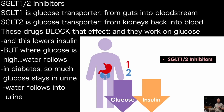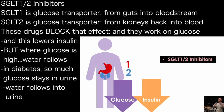However, there are consequences. There's something within physics called an osmotic gradient. Where there is a lot of glucose, water wants to follow. This is why in diabetes the person is urinating so much — because the glucose being filtered into the kidneys overwhelms the kidneys' ability to pull it back in. A lot of glucose stays in the urine, and where there's a lot of glucose, there's a lot of water, so there ends up being a lot of urine volume produced.